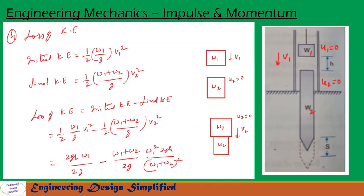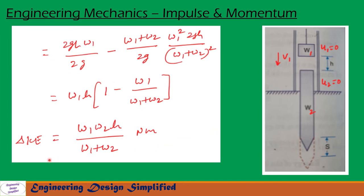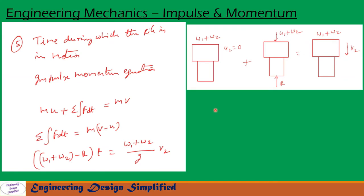Now let us find the loss of kinetic energy during impact. Initial kinetic energy equals (1/2)·(W1/g)·v1², which is the kinetic energy of the hammer. After impact, both hammer and pile move with velocity v2, so final kinetic energy equals (1/2)·[(W1 + W2)/g]·v2². After substituting values and simplifying, the loss of kinetic energy equals (W1·W2·h) / (W1 + W2) newton-meters.